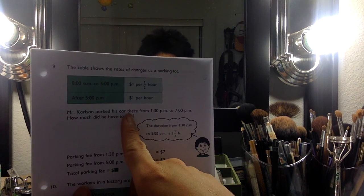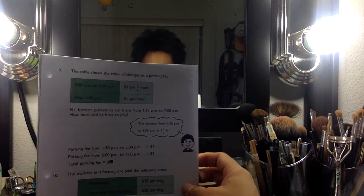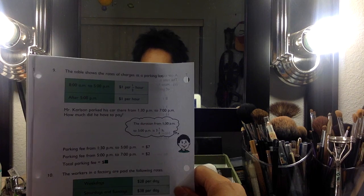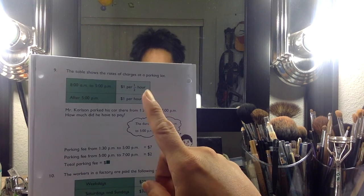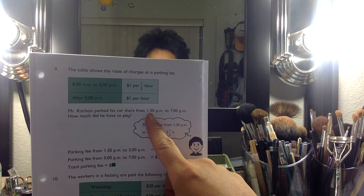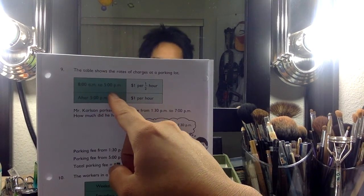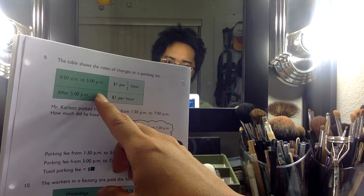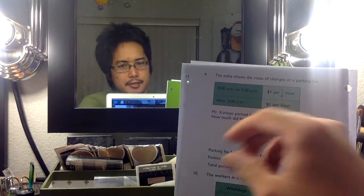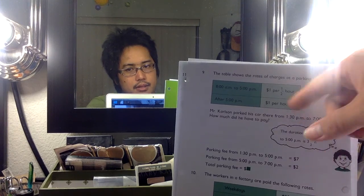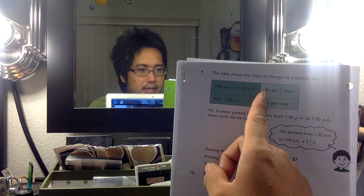Mr. Carlson parked his car there from 1:30 to 7 p.m. Maybe he had a date or met his wife for dinner or something like that. How much did he have to pay? When he was there at 1:30 p.m., he was in this area right here, so he was paying this rate - $2 for every hour or $1 for every half hour.